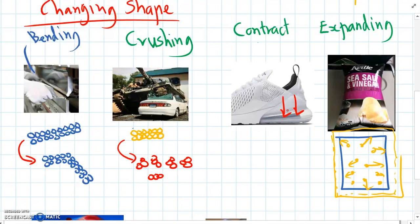So here are all the air particles. And then when you push down on the sole of the shoe, those air particles get contracted, which means they get squished and they take up a smaller space. They get pushed together. So that's called contracting.